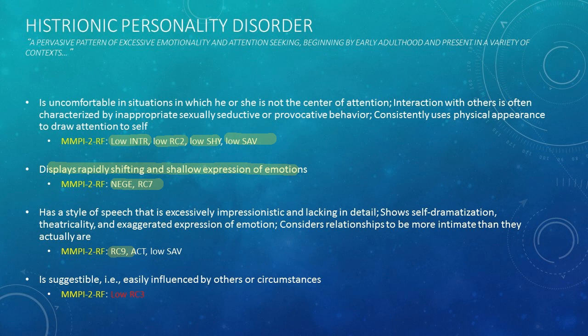For other exhibitionism and attention-seeking criteria, RC9, activation, and low social avoidance would best reflect these on the RF — though none of these scales measure these things directly, and effect sizes are indeed small. For suggestibility, low scores on RC3 were expected to reflect naivete, but this fails to come through in any research. You might see some pathological extroversion and maybe some negative emotionality and RC9 activation, but I would not put too much stock in our ability to assess histrionic personality disorder.